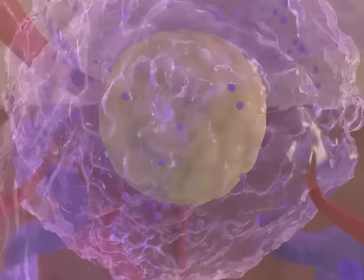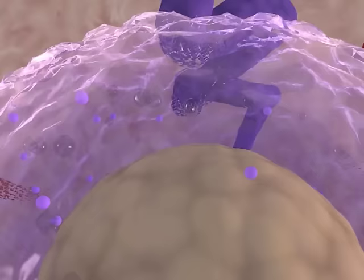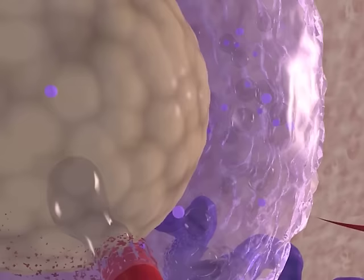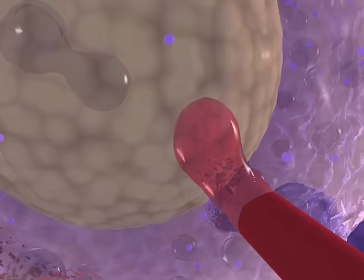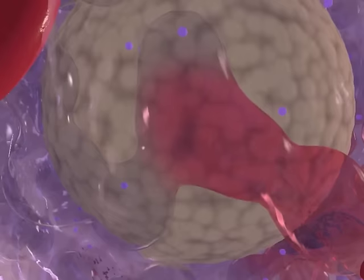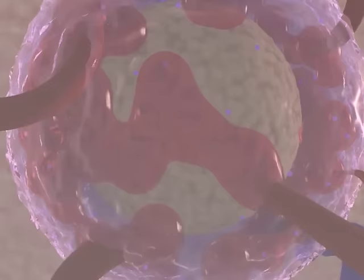Lacunae or spaces begin to form within the syncytiotrophoblast. As the syncytiotrophoblast erodes the endometrial blood vessels and glands, the lacunae become filled with maternal blood and glandular secretions. Isolated lacunae fuse to form a network through which maternal blood flows, thus establishing early utero-placental circulation.